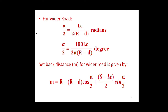For a wider road when LC is less than S: α/2 = LC / (2(R − d)) in radians, or α/2 = 180 × LC / (2π(R − d)) in degrees. The setback distance M in meters for a wide road is given by: M = R − (R − d) cos(α/2) + (S − LC)/2 × sin(α/2).